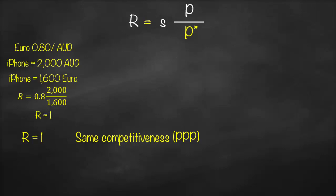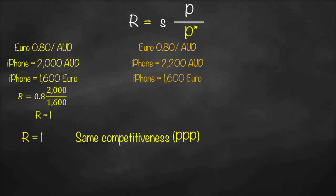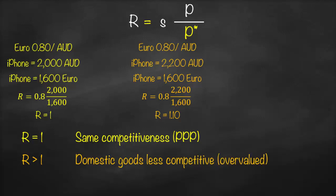Now let's assume that in Australia we increase the price of the iPhone. We keep the same exchange rate of 0.8 euro per Australian dollar, but the iPhone in Australia rises to 2,200, while the iPhone in Europe stays at 1,600. Our real exchange rate is then 0.8 multiplied by 2,200 divided by 1,600, giving R = 1.1. Since 1.1 is greater than one, the real exchange rate went up because we increased domestic prices. This means Australia is less competitive — our domestic goods are relatively more expensive — and consequently our currency is overvalued.